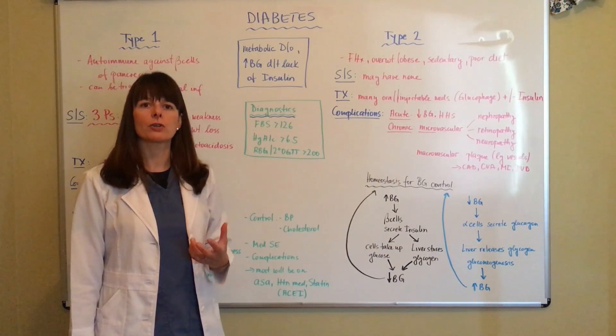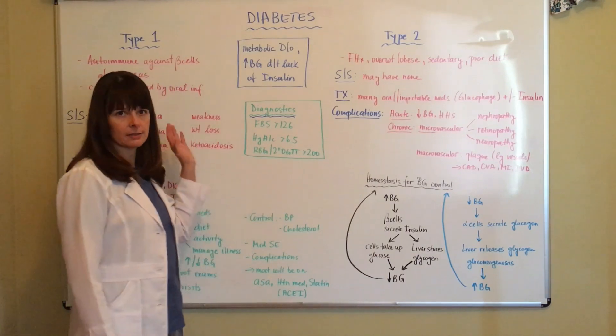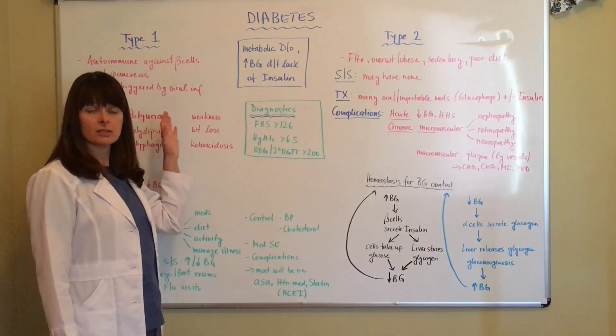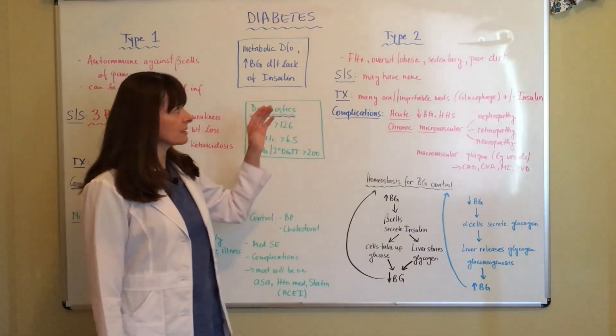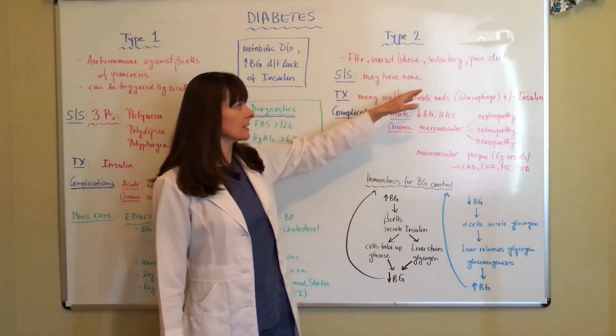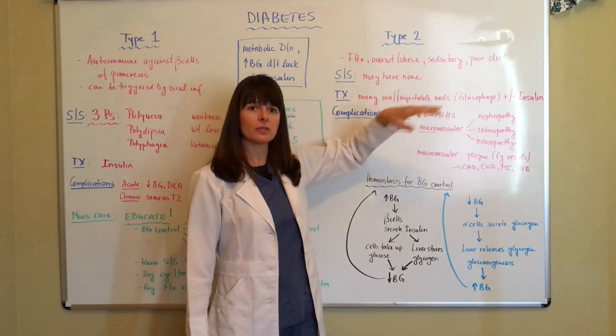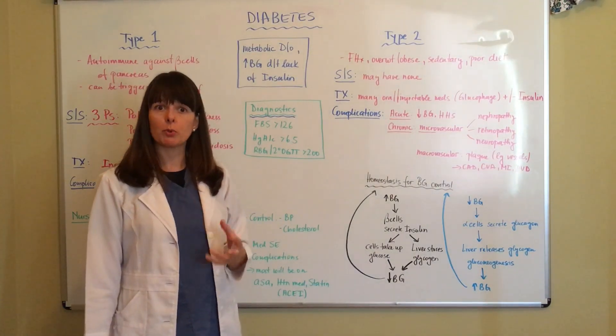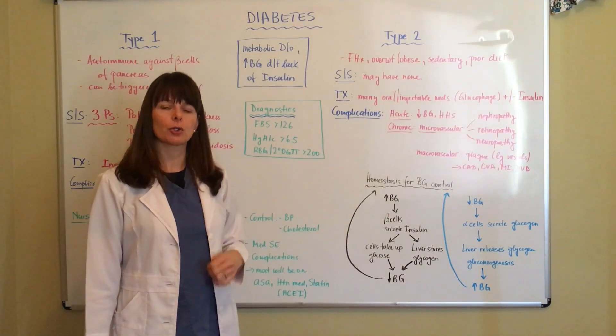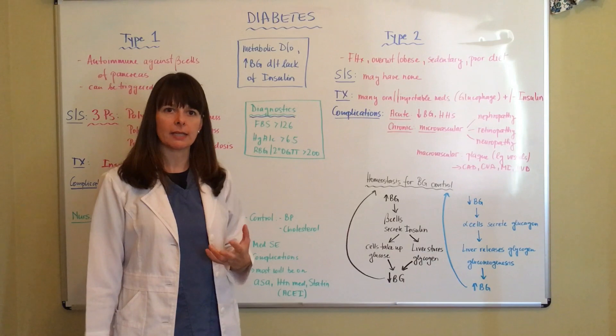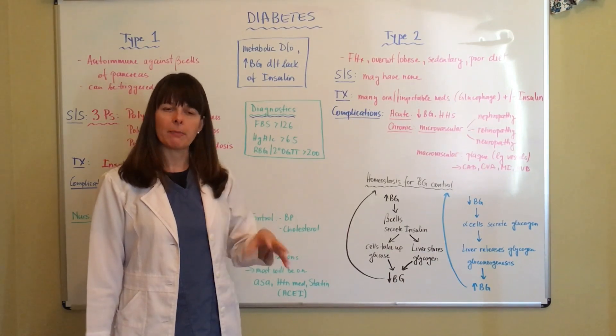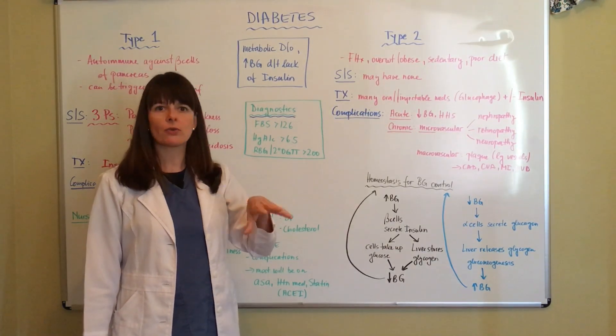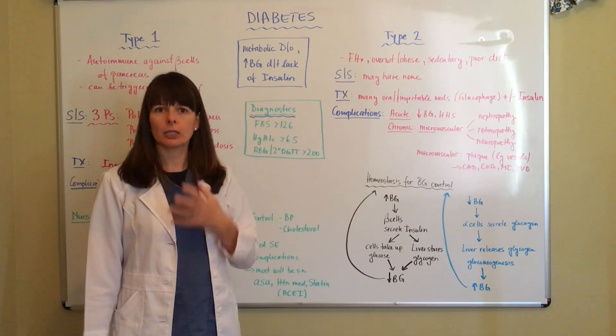The pancreas is working on overdrive. This is not a pancreas where the beta cells have been destroyed; the beta cells are still intact. But because the pancreas is working on overdrive because of this continued intake of poor diet, sedentary lifestyle, the glucose is not being taken up as normal, and the pancreas is working on overdrive. Eventually it'll just wear out.